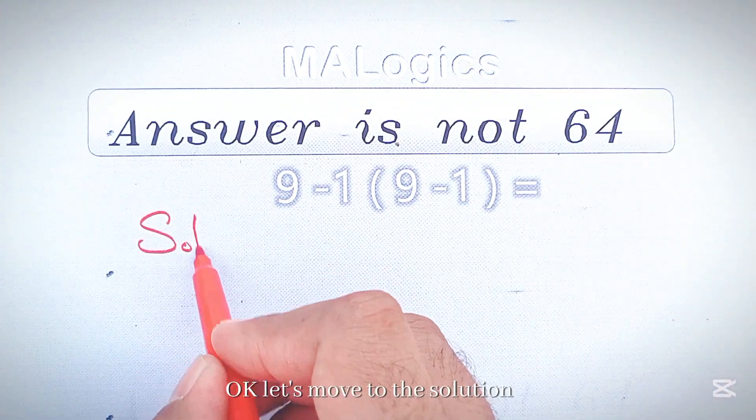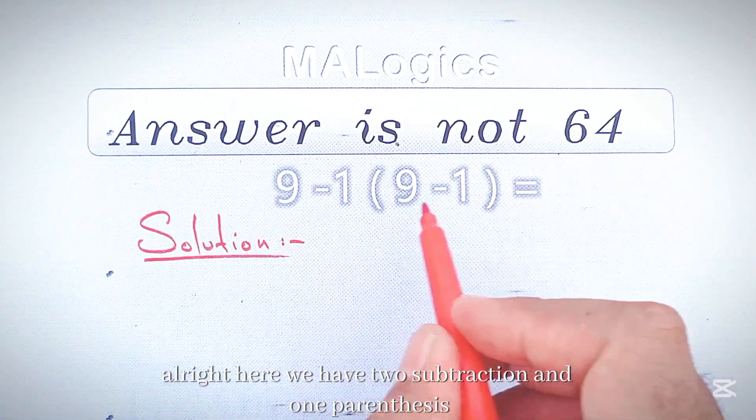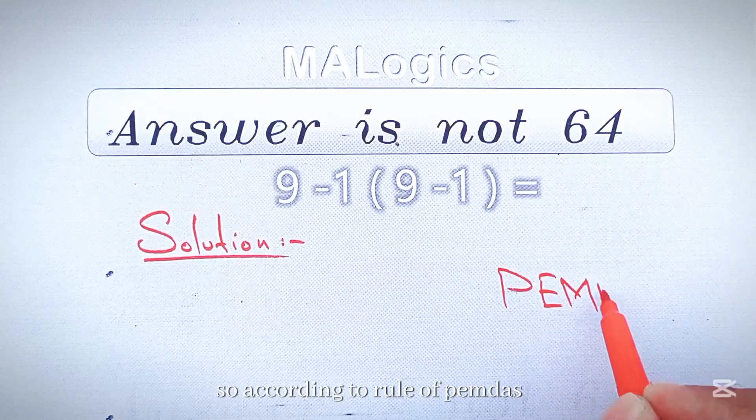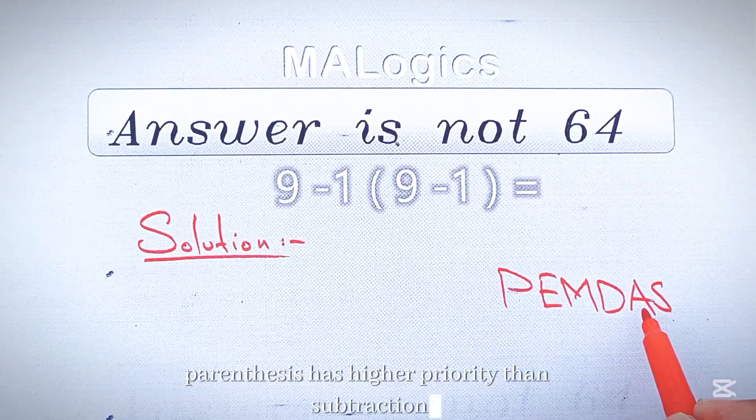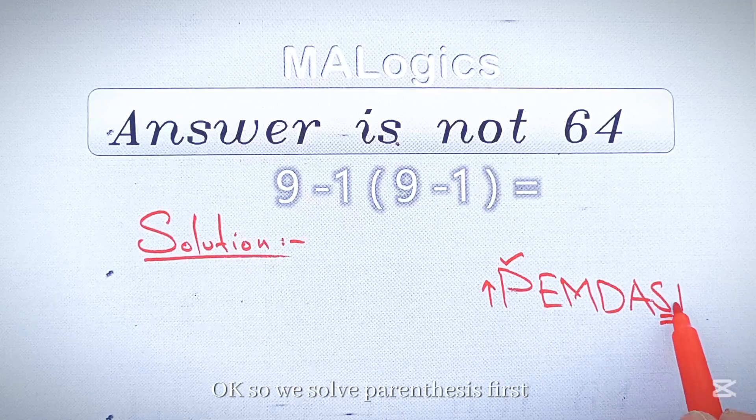Ok, let's move to the solution. Alright, here we have 2 subtractions and 1 parenthesis. So, according to the rule of PEMDAS, parenthesis has higher priority than subtraction. So we solve parenthesis first.